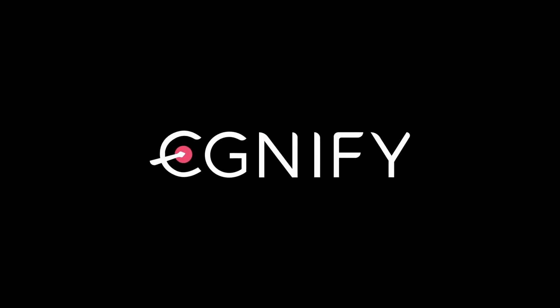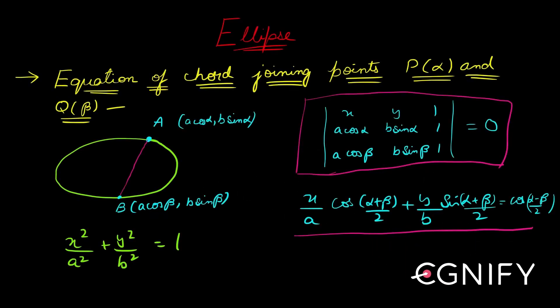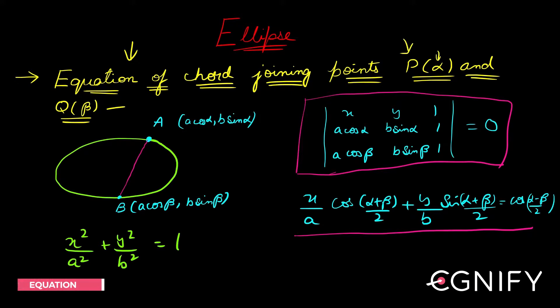Let us look at this useful result. There's no real new concept involved here, but just because the result is useful, I'm bringing it in front of you. How to find the equation of the chord joining two points P with eccentric angle alpha and Q with eccentric angle beta.